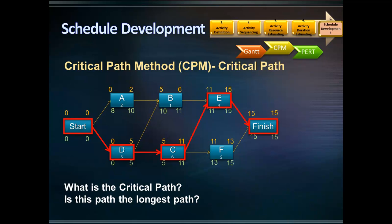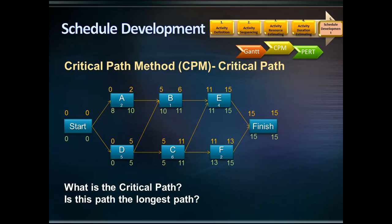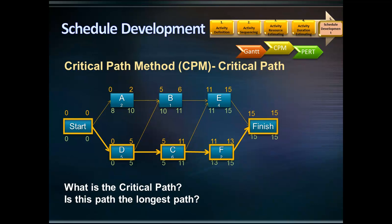The critical path is the longest path. Let's evaluate the different paths in this example. One path is Start → A → B → E → Finish, with a duration of 7 days. Another path is Start → D → B → E → Finish, with a duration of 10 days. Another path is Start → D → C → F → Finish, with a duration of 13 days. As you can see, the critical path — Start → D → C → E → Finish at 15 days — has the longest duration. That's why if an activity on the critical path is delayed, the entire project is delayed.